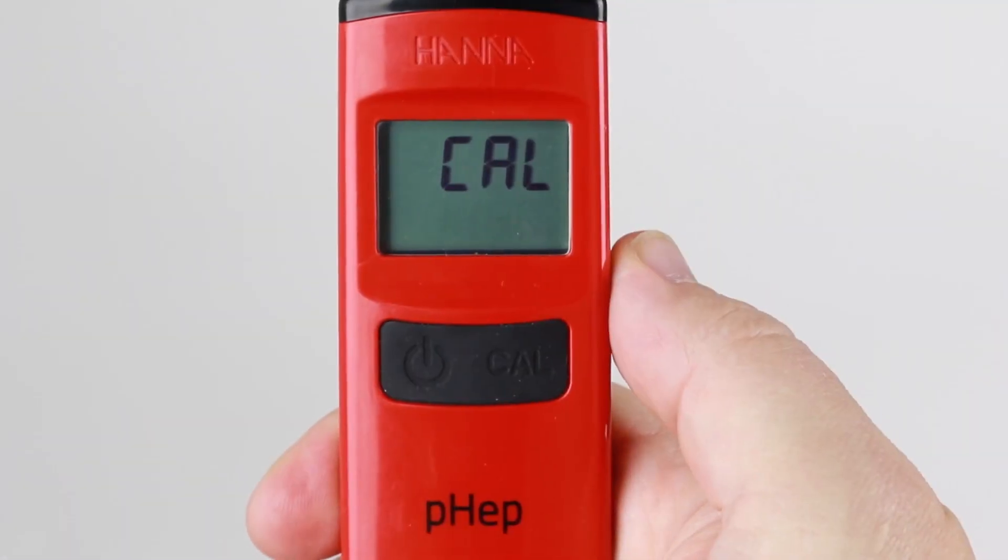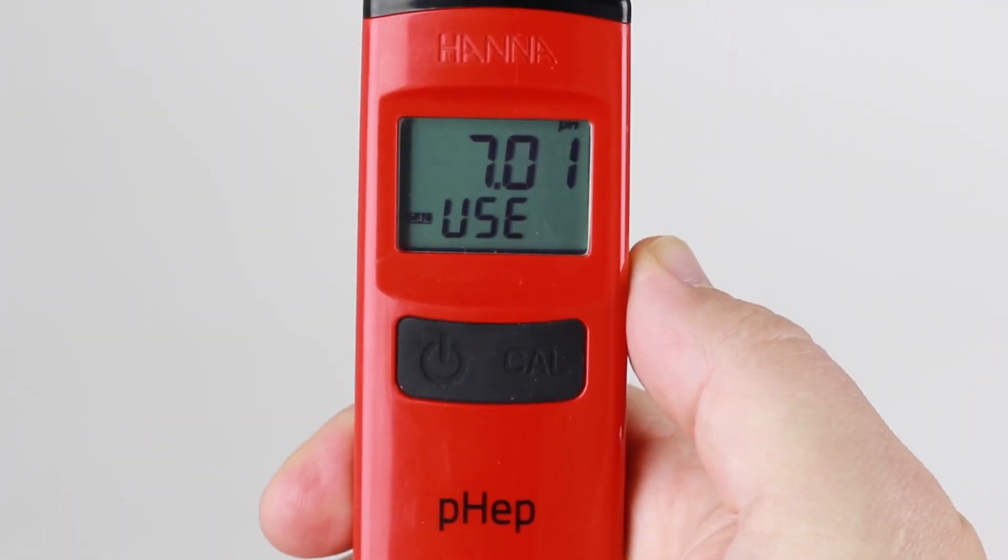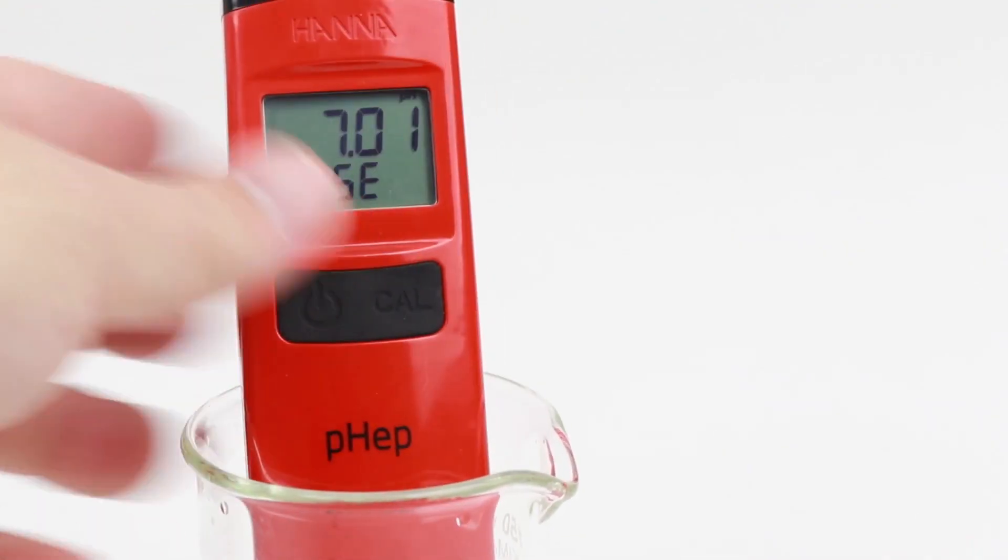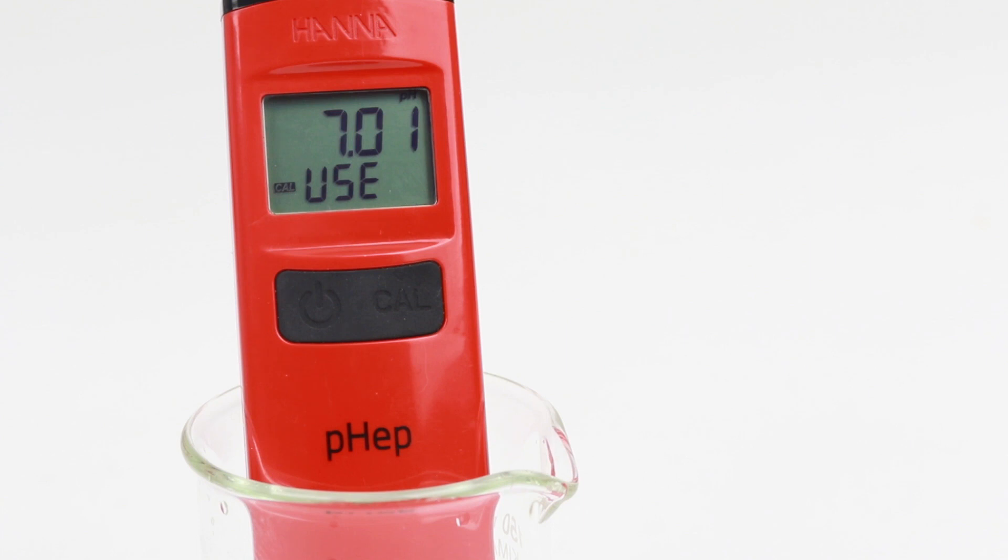To calibrate the meter, press the CAL button while the meter is on to enter calibration mode. For two-point calibration, the meter will prompt for the pH 7.01 buffer. Once the buffer is automatically recognized, the buffer will be updated and REC will be displayed and the meter will then display pH 4.01.